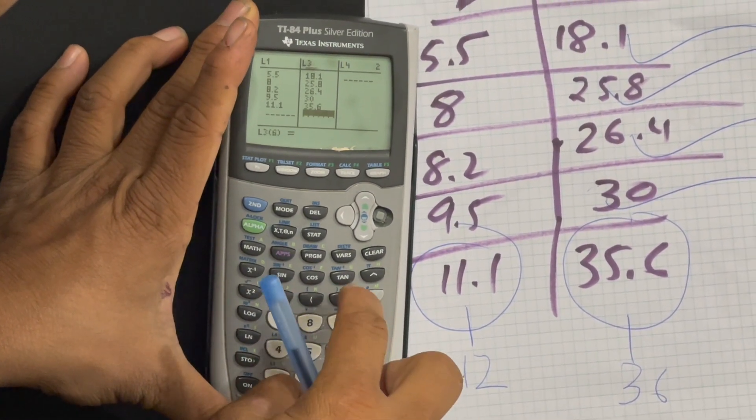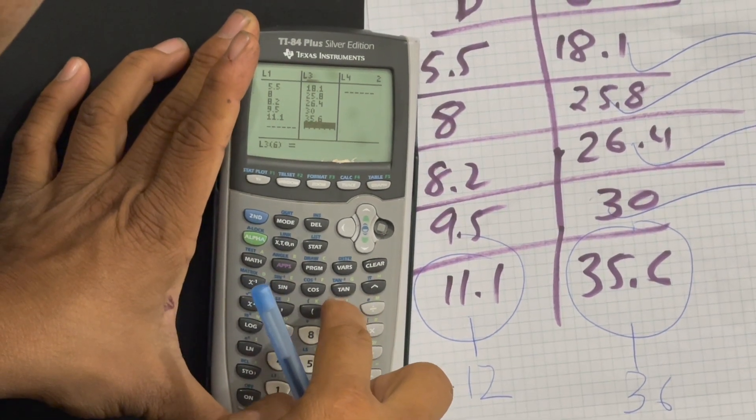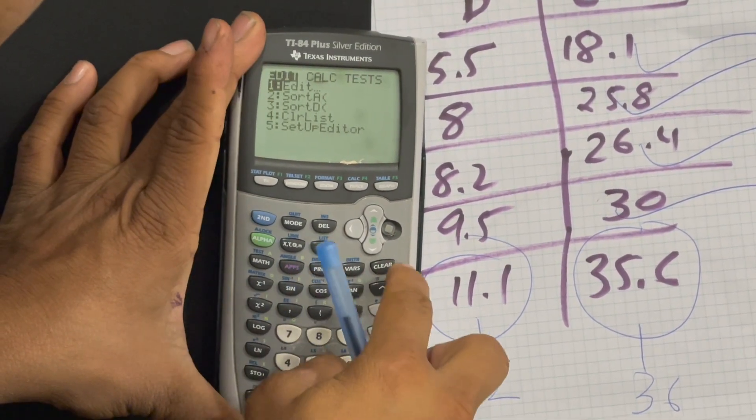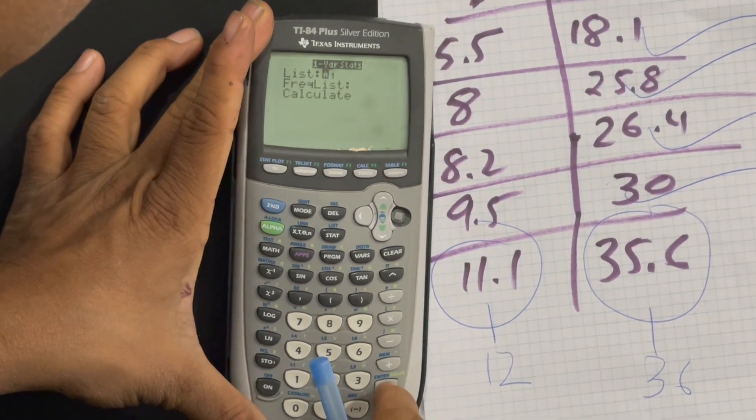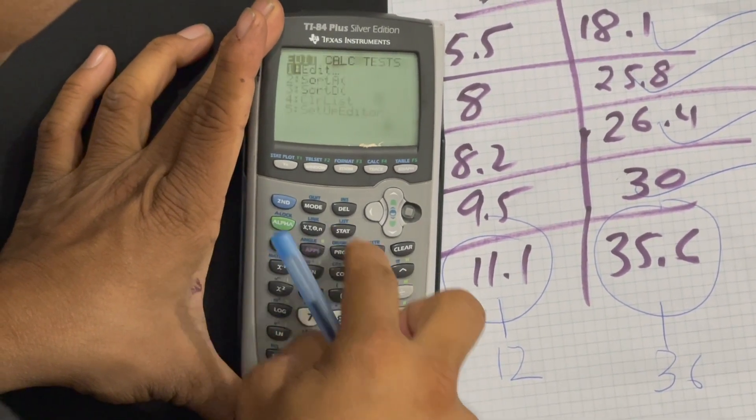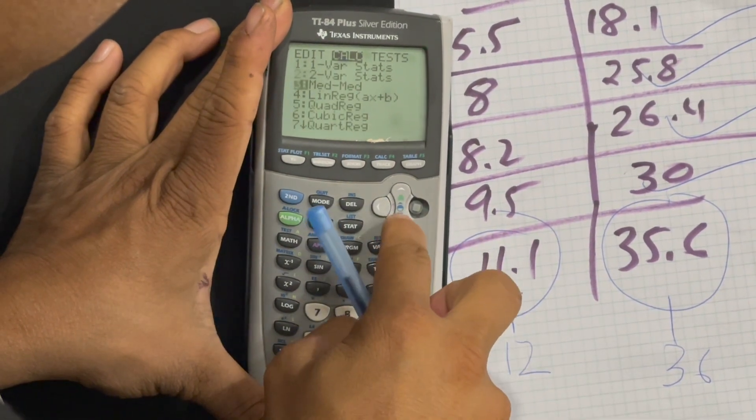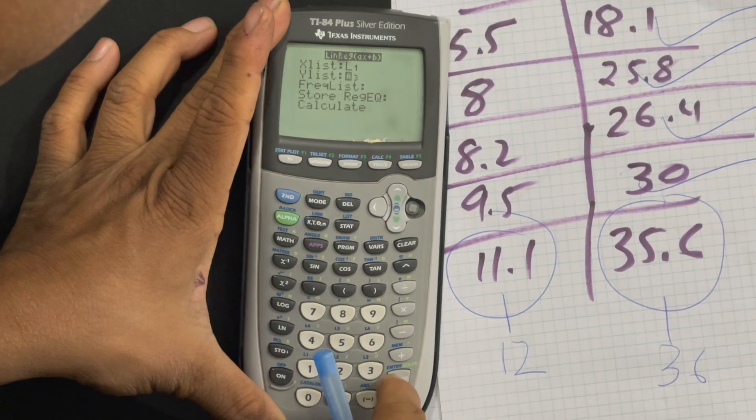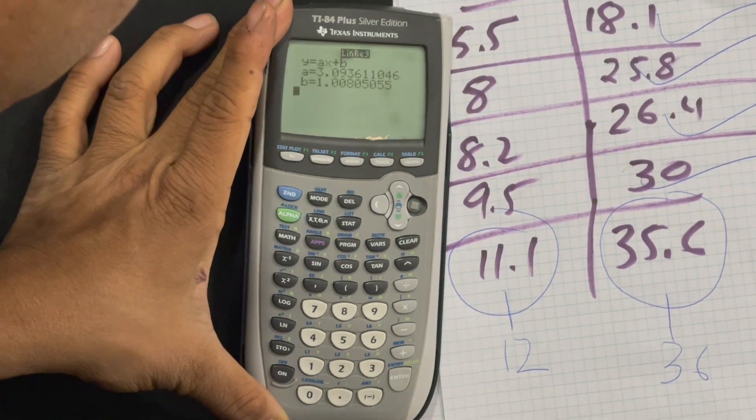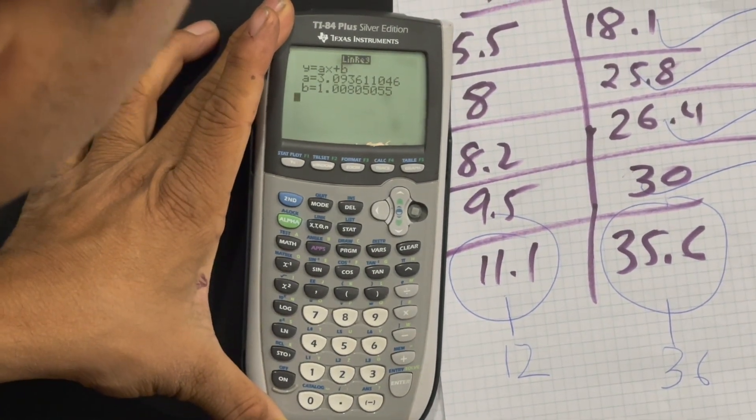And then I'm going to go to start. Linear. Start. And then linear regression. And then make sure I have everything correct. Calculate. Okay. So it's 3.09.